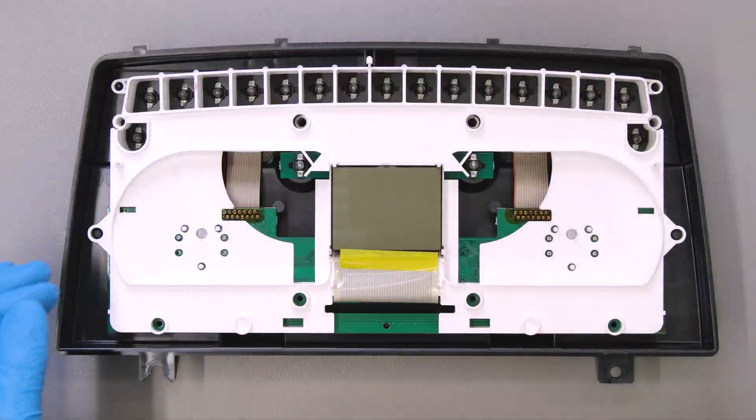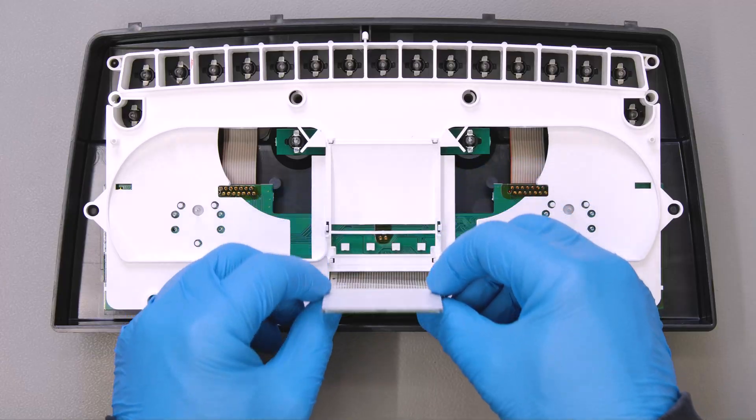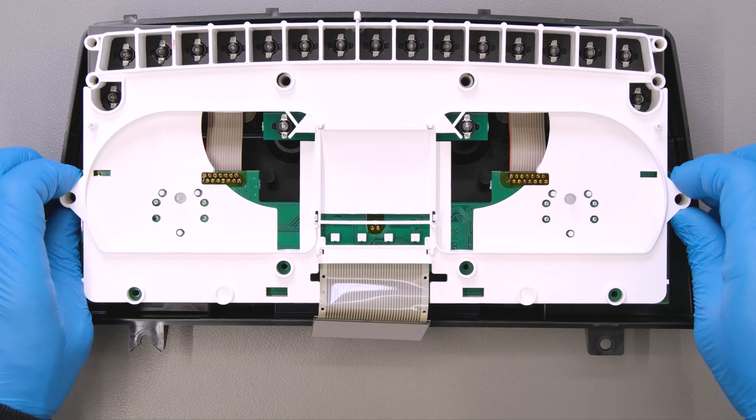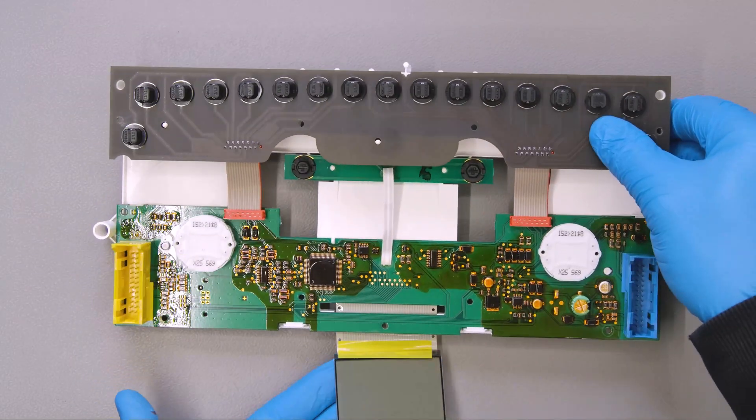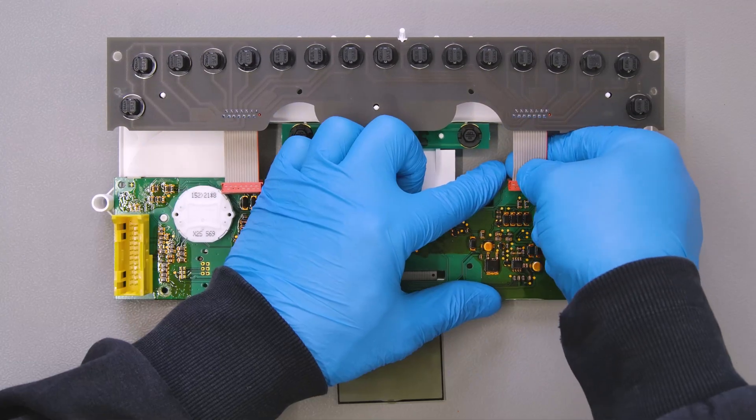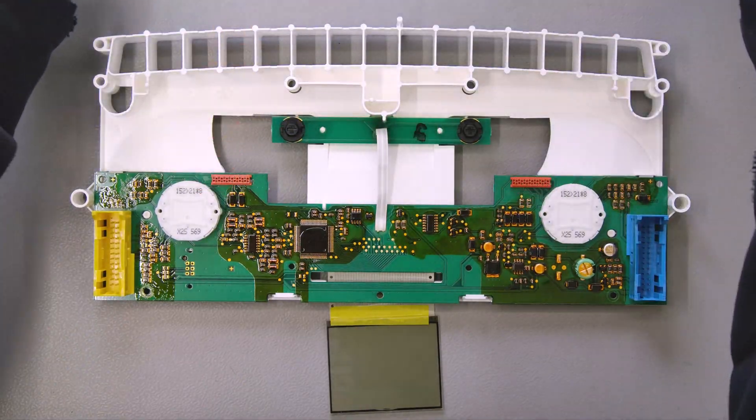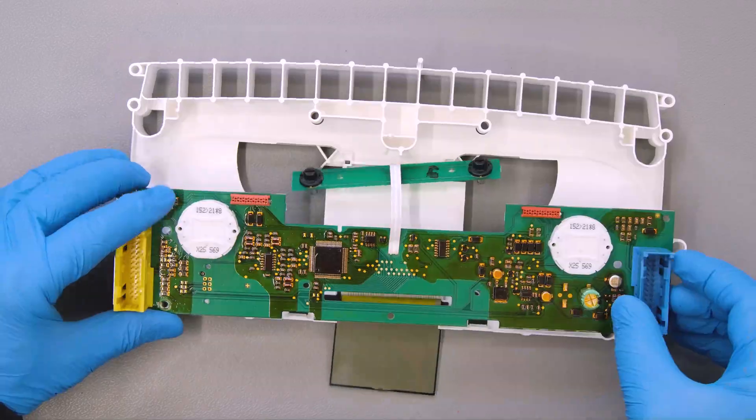Remove the overlay, unhook the display and take off the rear cover of the cluster. Undo the two FFCs from the PCB to remove the base with the bulbs, then release the bulb from the white plastic.